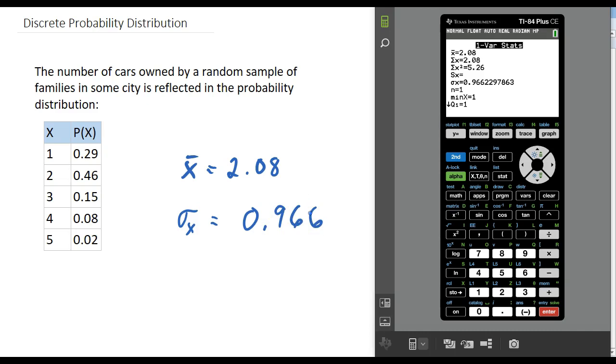The mean is 2.08, so the average number of cars owned by a family in this city is just over two. The standard deviation is pretty close to one, which means any number of cars between one and three is somewhat typical, and anything less or more than that is slightly less typical.